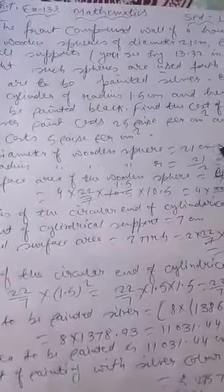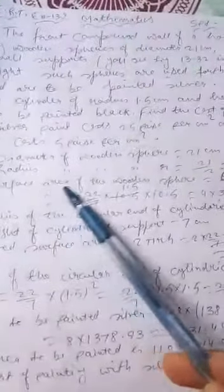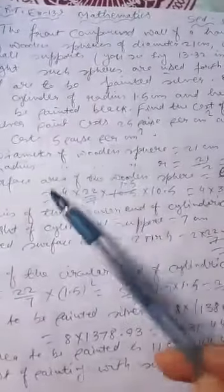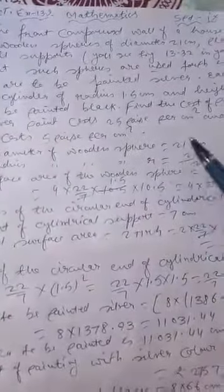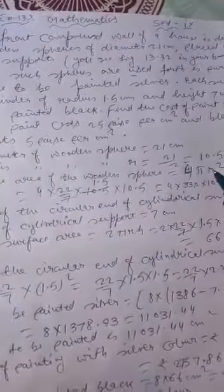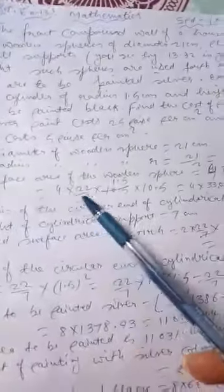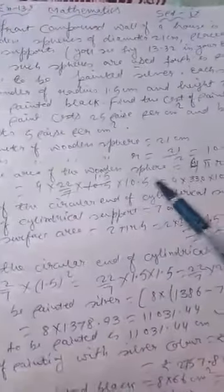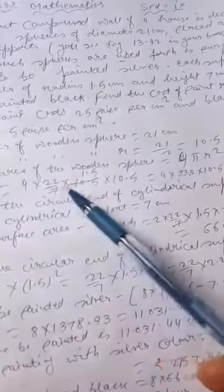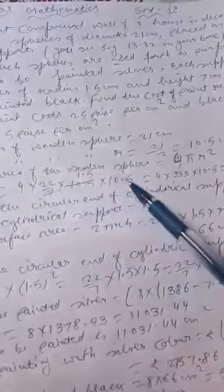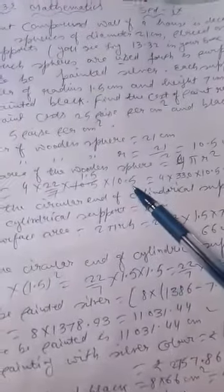The diameter of the wooden sphere is given as 21 cm. Therefore, the radius of the wooden sphere R is equal to half of 21, that is 10.5 cm. So the surface area of the wooden sphere is equal to 4πR², which is 4 into 22/7 into 10.5 into 10.5.